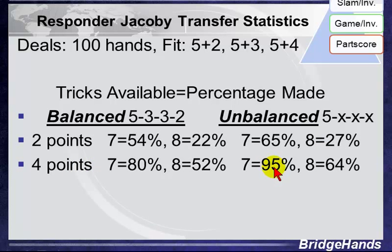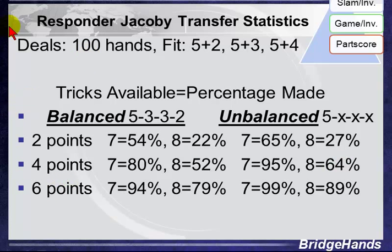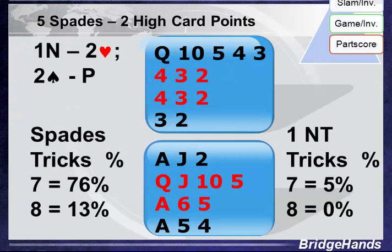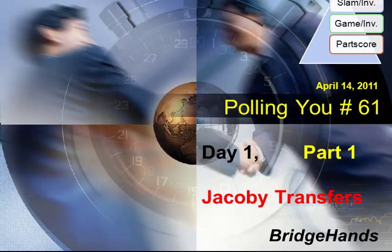With four points, we make seven tricks 95% of the time on unbalanced hands, versus 64% for the two-level major contract compared to 52% for balanced. At six points, the balanced hand makes seven tricks 94% of the time; the unbalanced hand reaches 99% — nearly every time. For eight tricks, the unbalanced hand is up to 89% versus 79% for balanced. With six points and an unbalanced hand, we're often making game — something to consider.